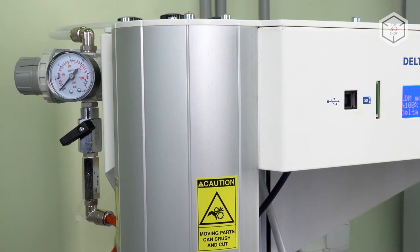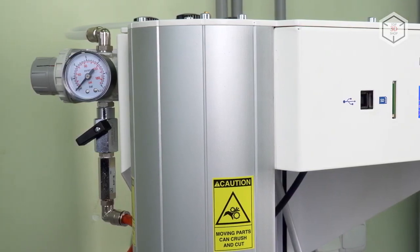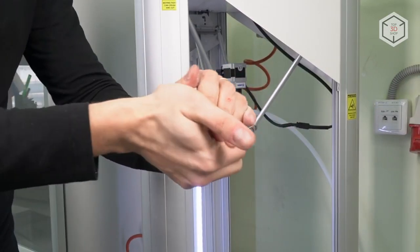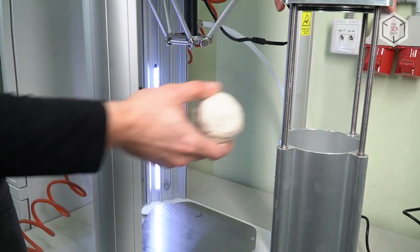The printer comes fully assembled. Before the first print, it is required to mount the pressure control and fill the cylindrical container with material pre-mixed with water or alcohol.